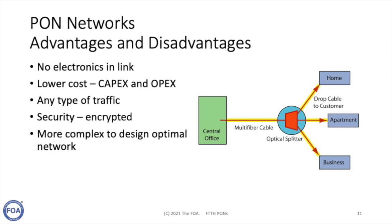Passive optical networks have lots of advantages. There's no electronics in the link — you need no electronics between your head end or central office and your subscriber. It's bidirectional over a single fiber, with signals going downstream to subscribers and back upstream to the central office. It's a very low-cost network, both in capital expenditure and operating expenditure. It can carry any kind of traffic — it's generally all digital Ethernet. It's also secure: because the downstream signal is split to many users, all passive optical networks are already encrypted, making them very popular with government agencies and the military.